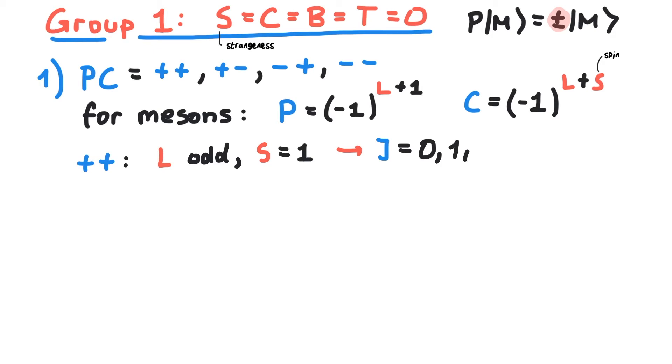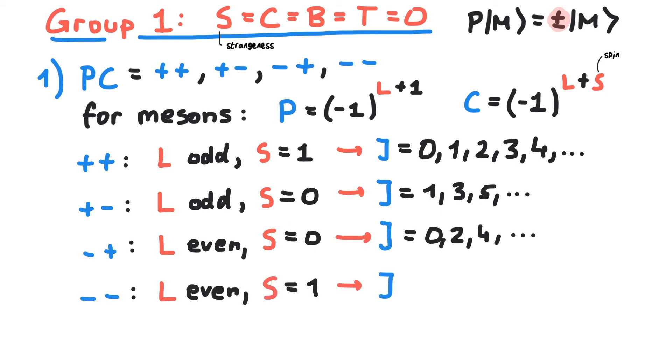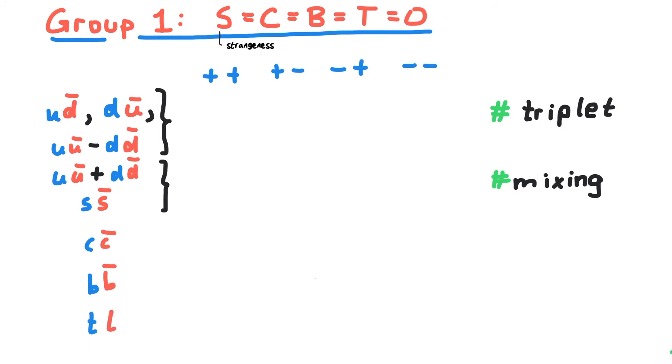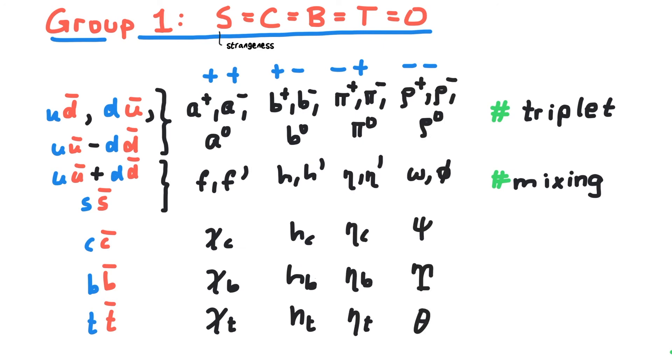So the allowed values for the total angular momentum are 0, 1, 2, 3, etc. Similar calculations lead to the allowed values for the other P-C combinations. Next we'll consider quark structure. The U and D quarks form a triplet, like this. The fourth possible combination can mix with a S-S-bar structure and the other combinations are too heavy to mix with the lighter ones. For the P-C structures we identified earlier, we assign the following names. Now the name of a meson tells us about the quark structure and its P-C eigenvalues.